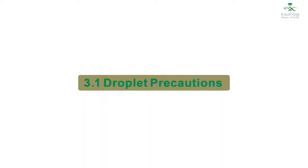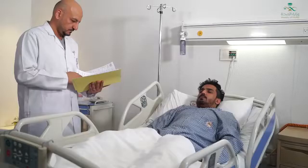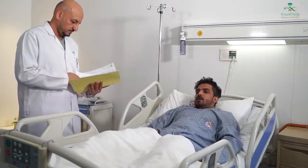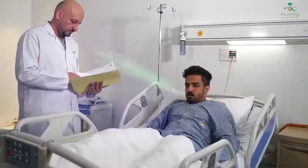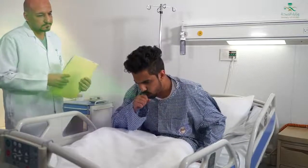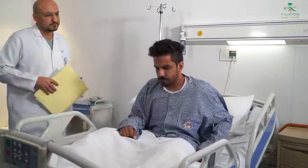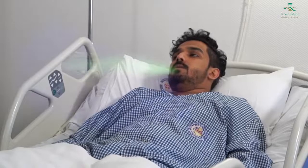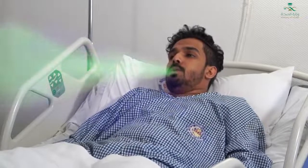Transmission-based precautions. Droplet precautions: This patient suffers from flu. People with flu can spread it to others within one to two meters away. Droplet transmission of flu viruses spreads mainly by droplets made when people with flu cough, sneeze, or talk. These droplets can land in the mouths or noses of people who are nearby or possibly be inhaled into the lungs. Examples of diseases transmitted by large droplets include influenza, meningococcal meningitis, and pertussis. Precautions must be implemented to prevent droplet transmission.